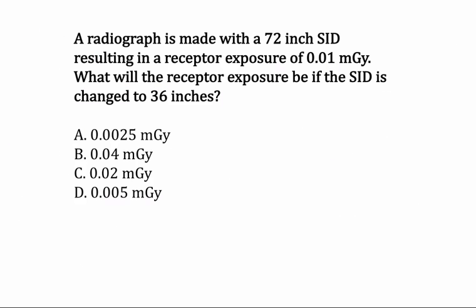Problem number one: A radiograph is made using a 72 inch SID resulting in a receptor exposure of 0.01 milligray. What will the receptor exposure be if the SID is changed to 36 inches? So the thing to notice here is that the SID is changing. We have an initial receptor exposure of 0.01 milligray and our initial SID is 72. Our new SID is 36 inches.